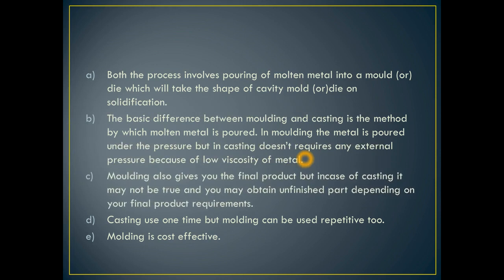Now both the processes are closely related. The two processes are almost similar. Both processes involve pouring of metal into a mold or die which will take the shape of a cavity. Mold or die and solidification — the two processes are made in the process of mold and metal, the mold cavity and die casting.